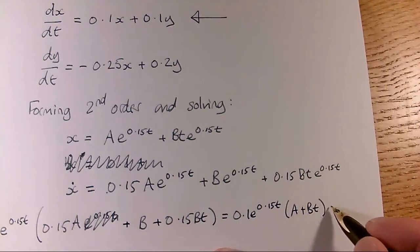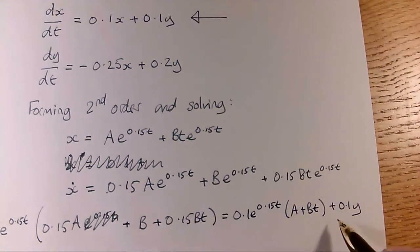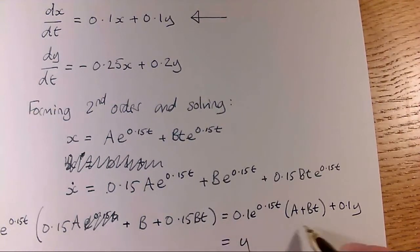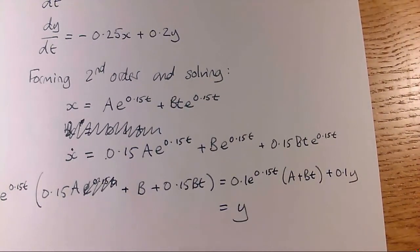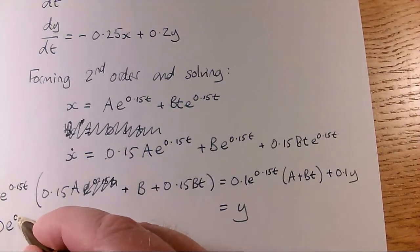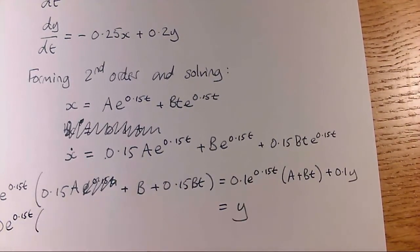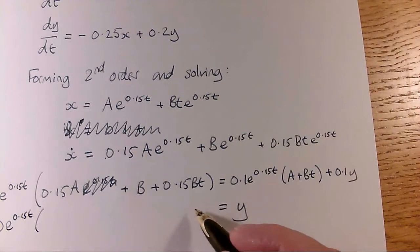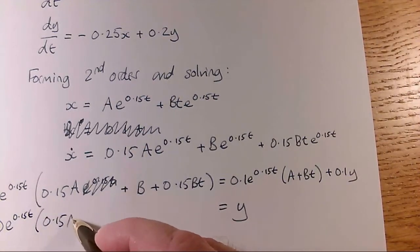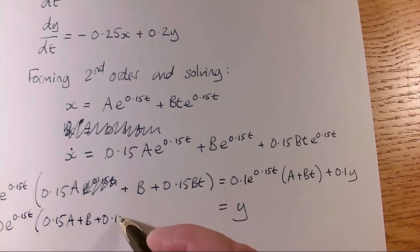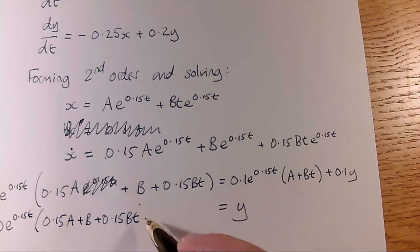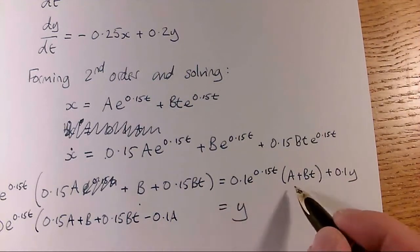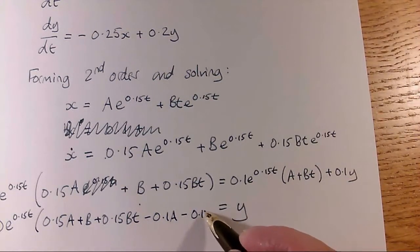Okay, and then I've just got a plus 0.1y, so make y the subject, so subtract this across and multiply up by 10. Okay, so I'm going to get 10e to the 0.15t, that's my common factor. So I'm going to have 0.15a plus b plus 0.15bt, and then I've got this minus 0.1a minus 0.1bt.